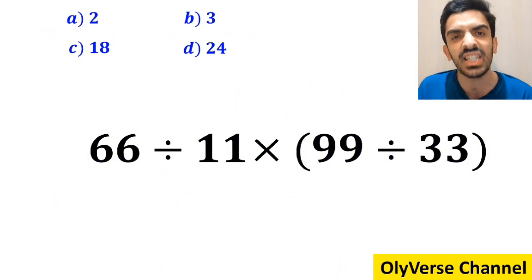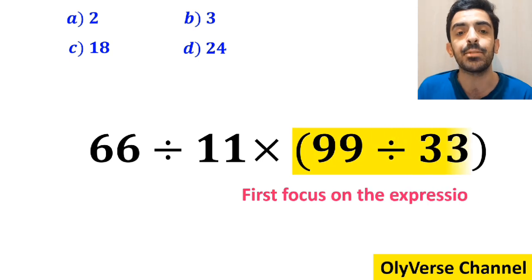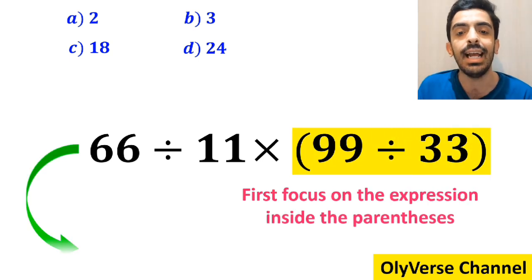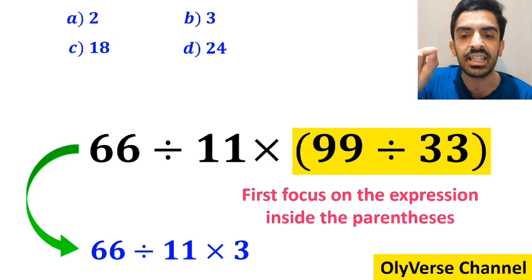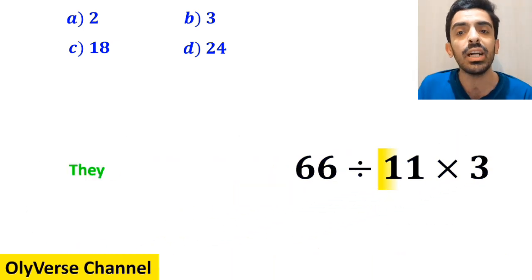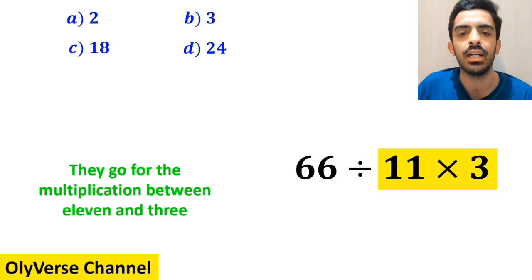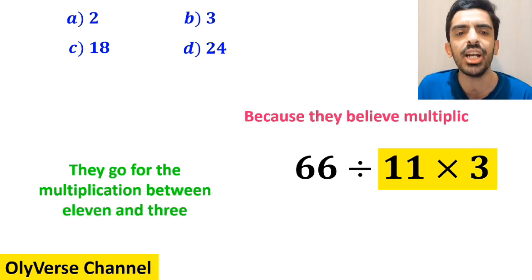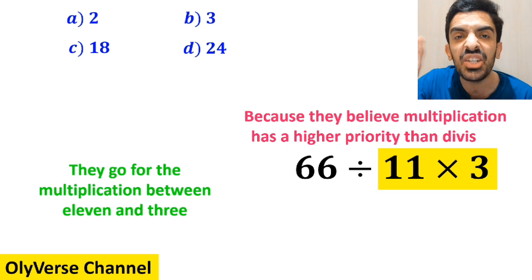Many people, when starting to solve this question, first focus on the expression inside the parenthesis. And instead of considering the whole expression, they rewrite it as 66 divided by 11 multiplied by 3. In the next step, they go for the multiplication between 11 and 3, because they believe multiplication has a higher priority than division.